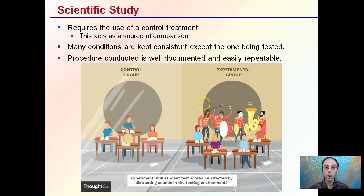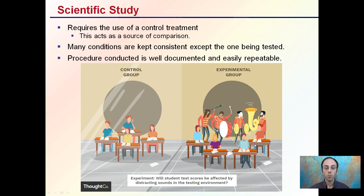A scientific study does require use of a control group, because this acts as a source of comparison. Many conditions are kept consistent except the one being tested. Procedures conducted are well documented and easily repeatable — that's a key part of scientific studies. For example, looking at whether students' test scores are affected by distracting sounds in the testing environment, you have a control group compared to an experimental group — not just one student each, but a collection of students in each group. That's the general idea behind a scientific study.